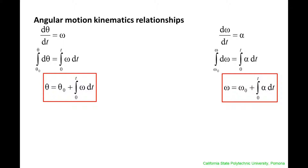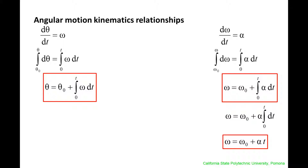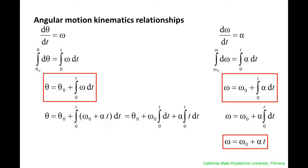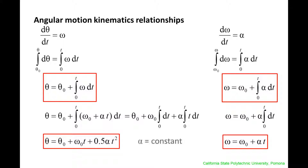For the case where the angular acceleration is constant, alpha can be pulled out of the integral in the right equation, and omega is equal to omega naught plus alpha times t. If we then plug in this expression for omega into the equation on the left and pull out the constants omega naught and alpha from the integral, we get theta is equal to theta naught plus omega naught t plus one half alpha t squared. The last two highlighted equations are only valid for constant angular acceleration.